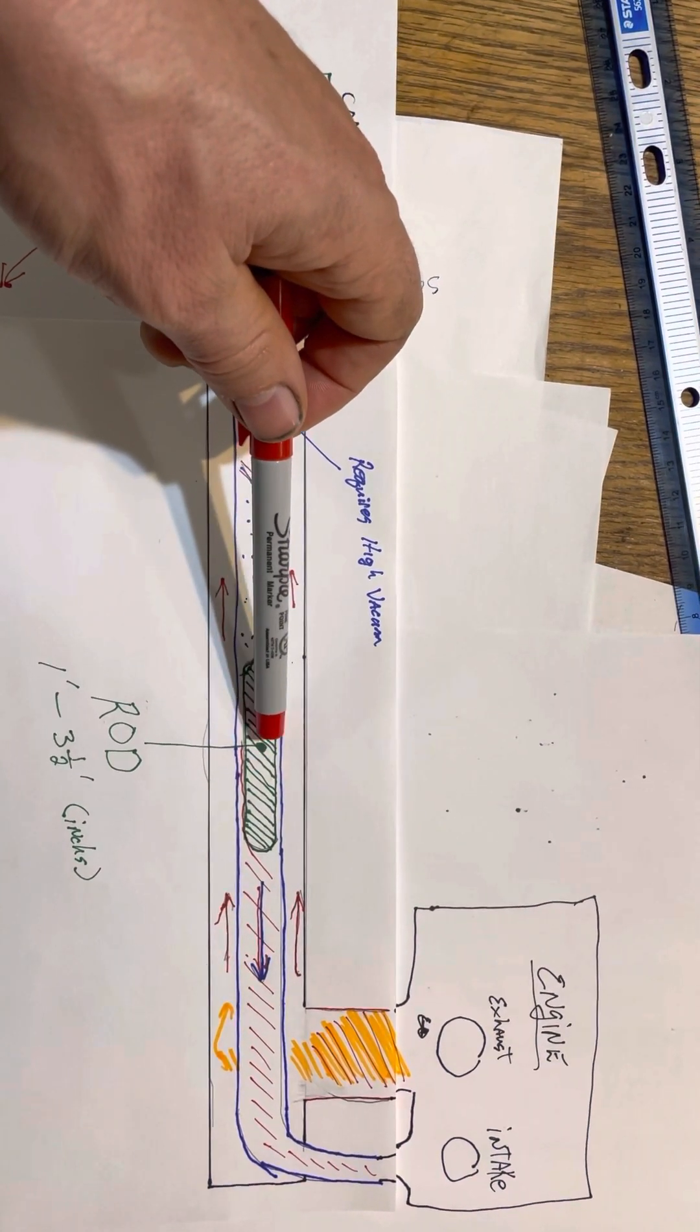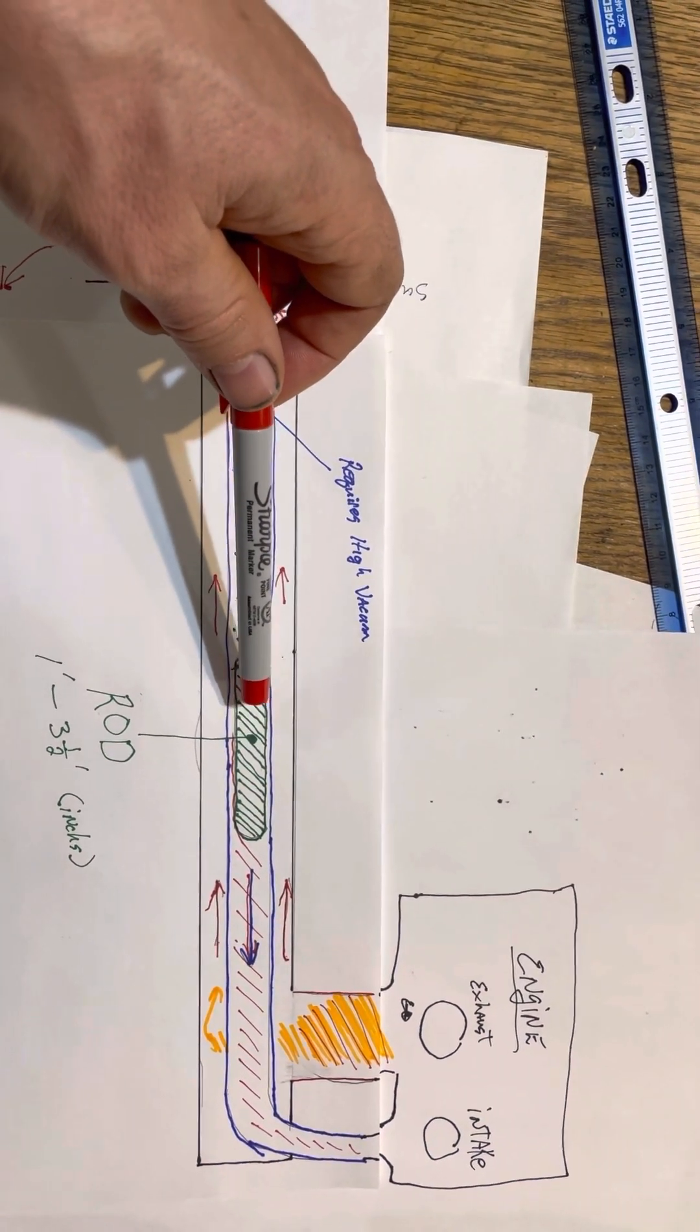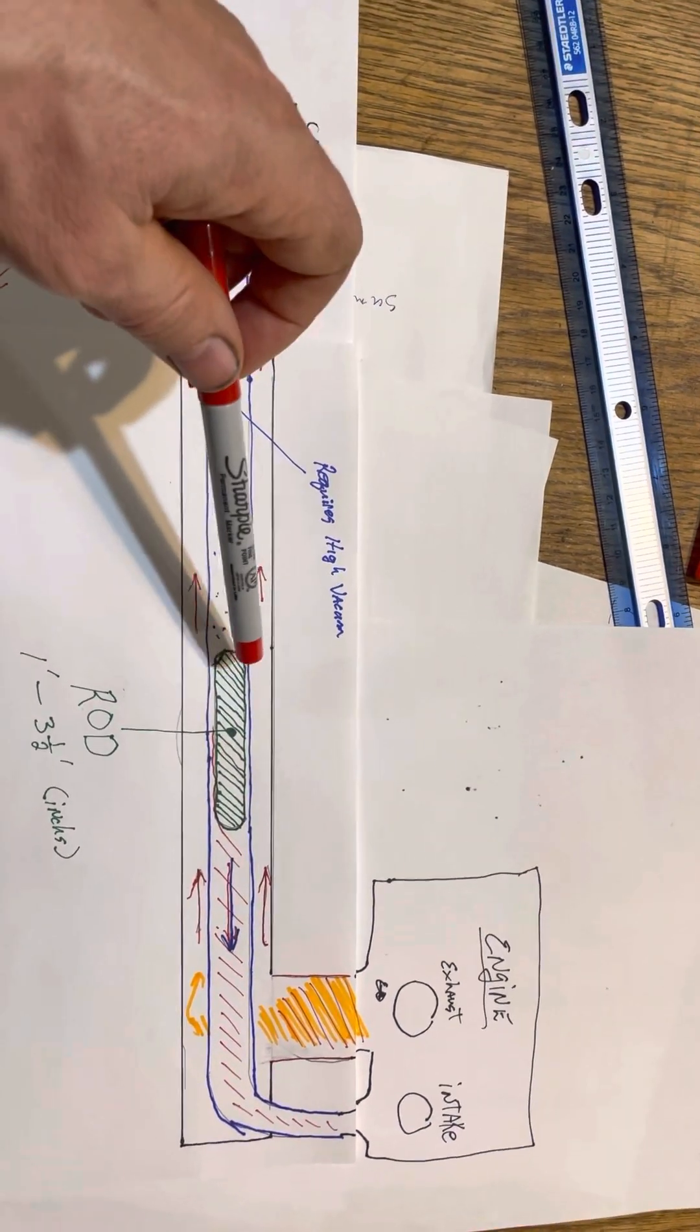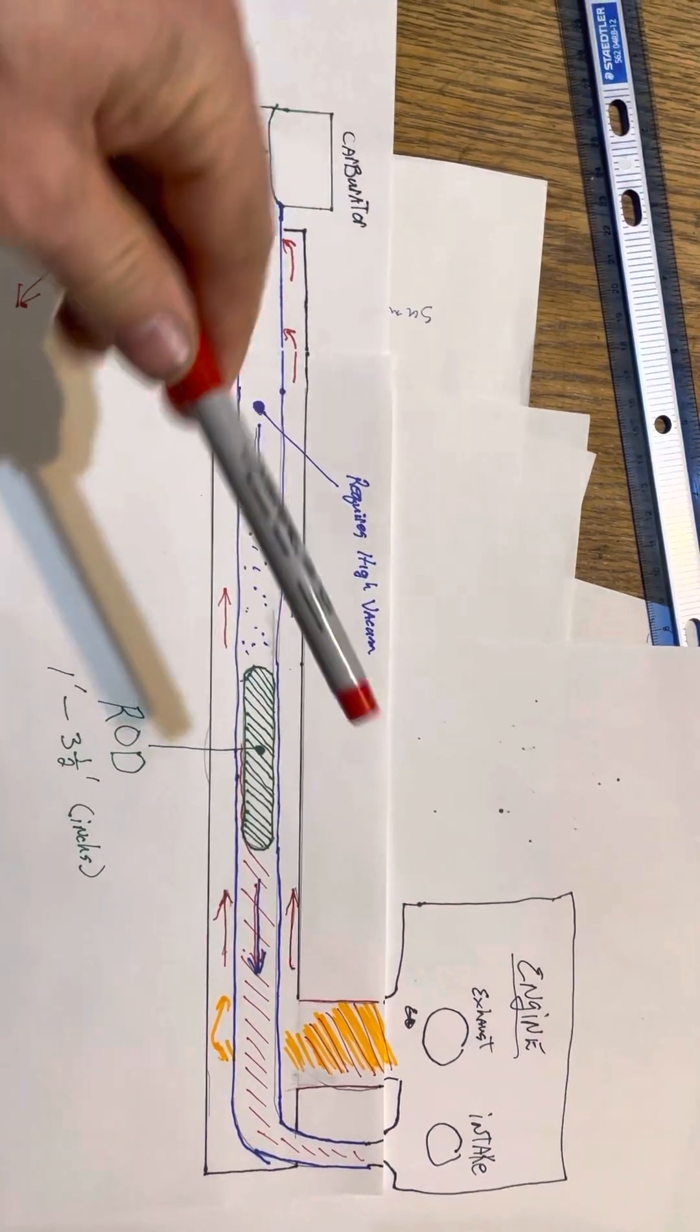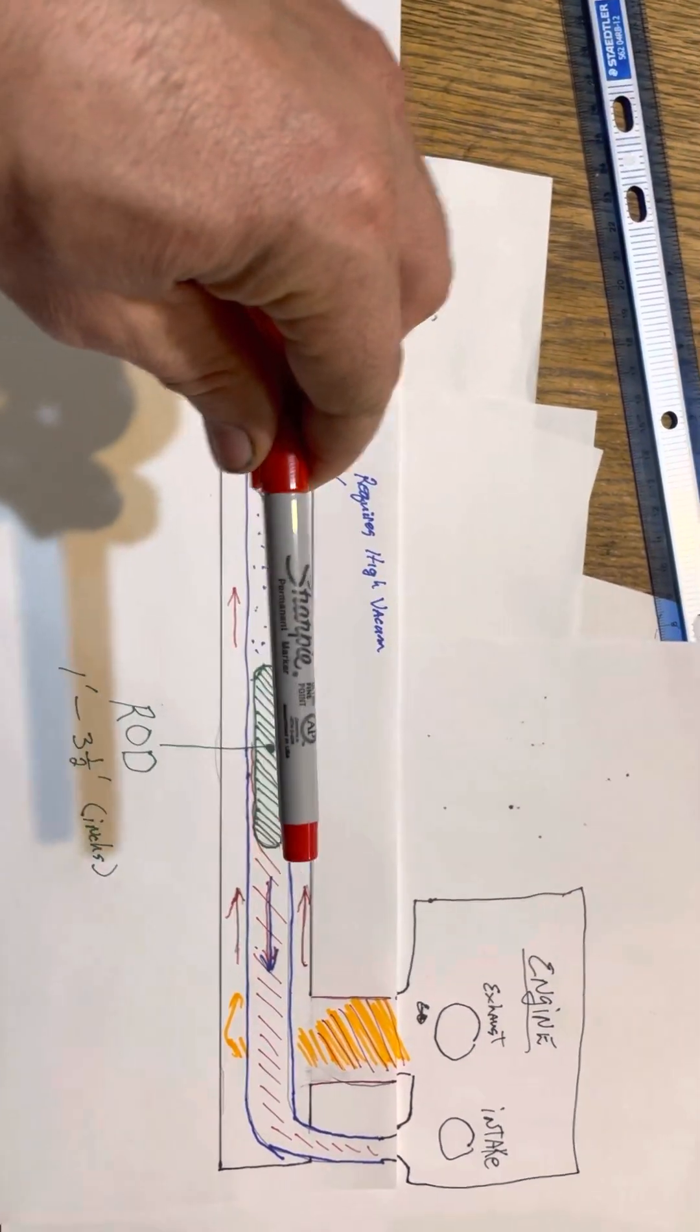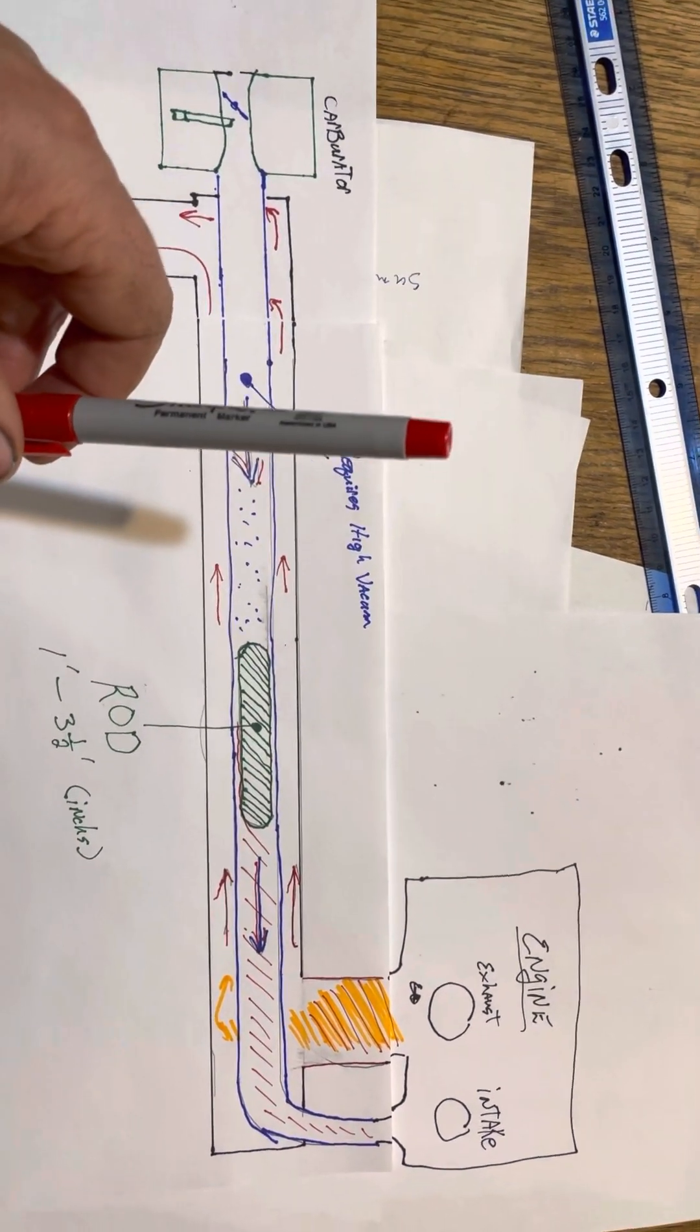These fuel processors work best when they're straight up and down. This is horizontal, but the best way to do it is straight up and down. It's not always possible, but if it is, that's better.